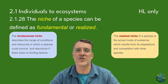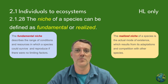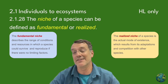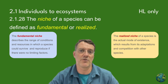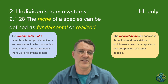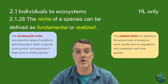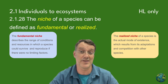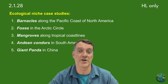Think of the fundamental niche as a species' theoretical home — all the places it could potentially live if nothing else got in its way. The realized niche, however, is where the species actually lives after accounting for all the real world limitations like competition and human activity. Let's go through five different examples from around the world.